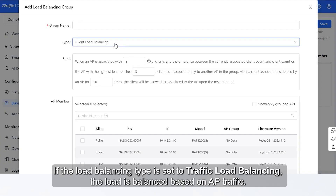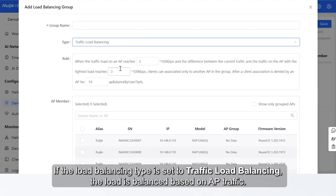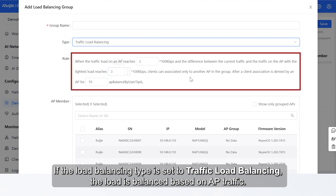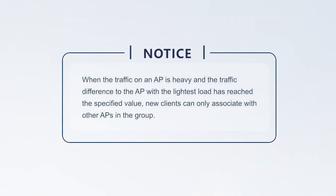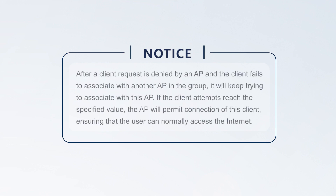If the Load Balancing Type is set to Traffic Load Balancing, the load is balanced based on AP traffic. When the traffic on an AP is heavy and the traffic difference to the AP with the lightest load has reached the specified value, new clients can only associate with other APs in the group. After a client request is denied by an AP and the client fails to associate with another AP in the group, it will keep trying to associate with this AP. If the client attempts reach the specified value, the AP will permit connection of this client, ensuring that the user can normally access the Internet.